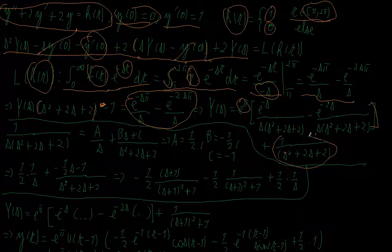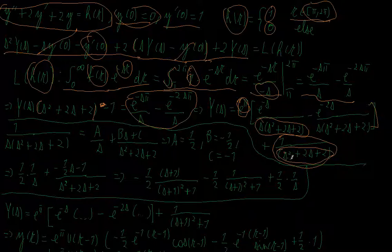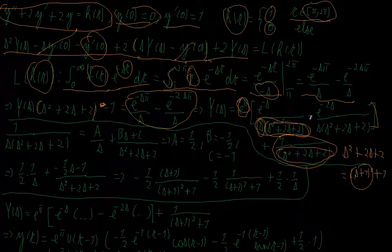Note that the term 1/(s² + 2s + 2) is not multiplied by e^(−sπ). Now I do a partial fraction decomposition for 1/(s(s² + 2s + 2)). For the other term, 1/(s² + 2s + 2), I will use the shifting theorem by rewriting s² + 2s + 2 as (s+1)² + 1.